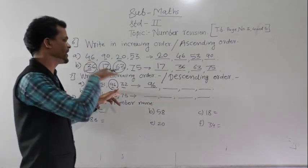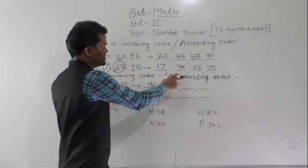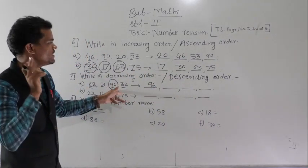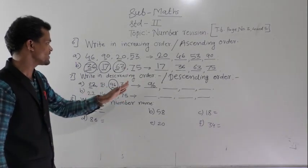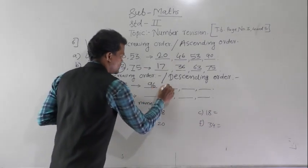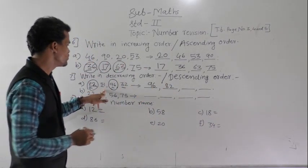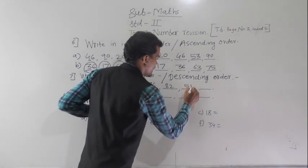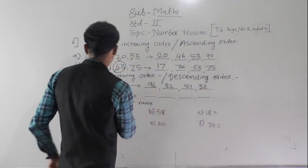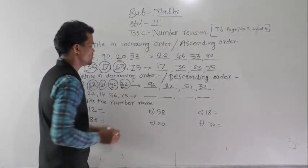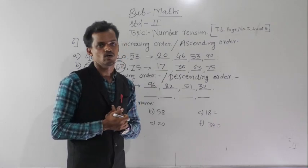We have to arrange these numbers from greatest to smallest because the instruction is to write in descending order. So 96 comes first. Smaller than 96 is 82, then 51, and at last 32. These numbers are arranged in descending order.